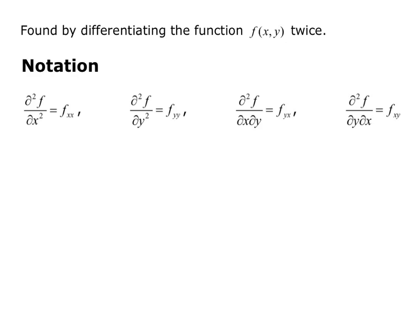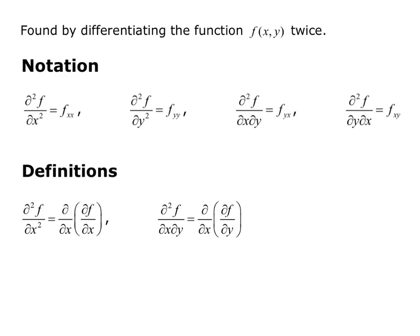Our first option is partial squared f over partial x squared, equals f sub xx. That is equivalent to doing the partial derivative with respect to x of the partial derivative of f with respect to x — so we do the partial derivative with respect to x twice. Our next option is partial squared f over partial y squared, equals f sub yy, and that would be the partial derivative with respect to y twice.